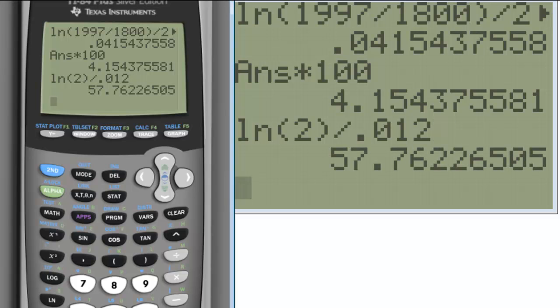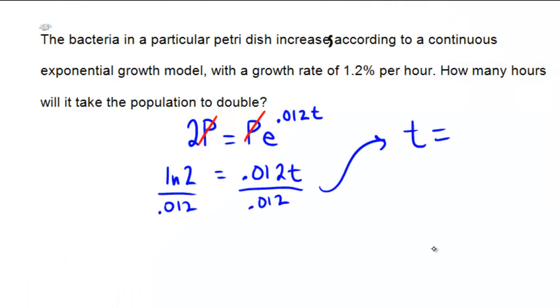And it looks like this comes out to be 57.76, rounded to two decimal places. So we'll give an answer of 57.76 hours, rounded to two decimal places.